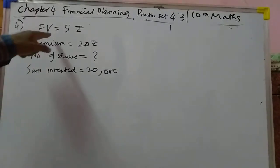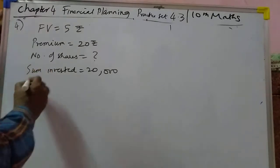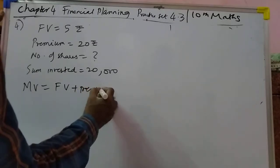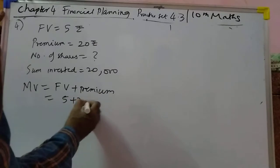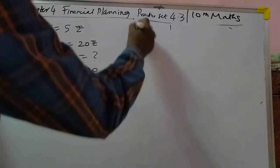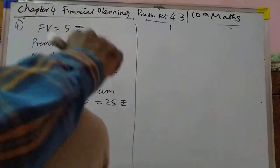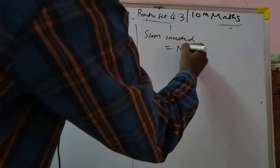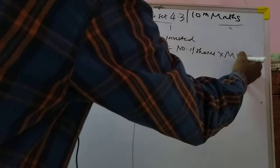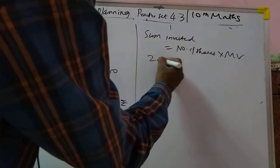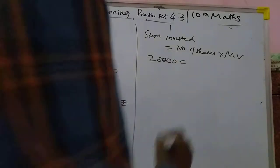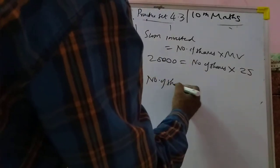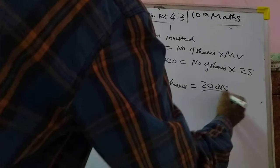Fourth problem: face value is given and premium is 20, so market value equals face value plus premium, that is 5 plus 20 equals 25 rupees. Using the formula, sum invested equals number of shares into market value. Sum invested is 20,000, so 20,000 equals number of shares into 25. Therefore, number of shares equals 20,000 upon 25.